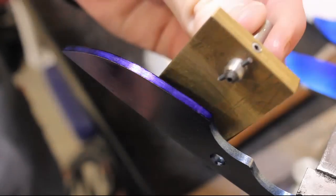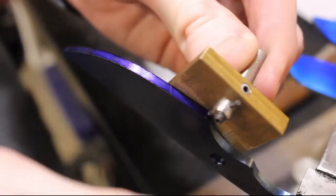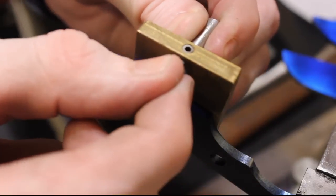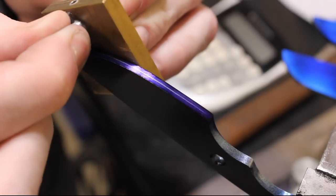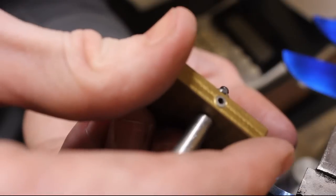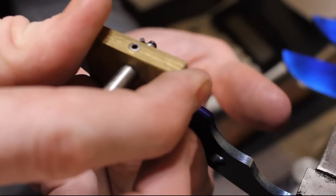I have this handy centerline scribe that my father made me back in 2005. Still going strong. Put a nice line in the center of the blade to give us a reference to grind to.